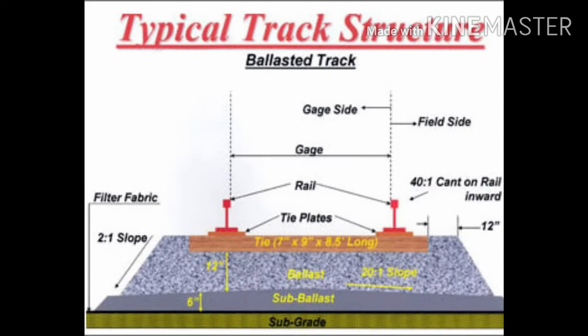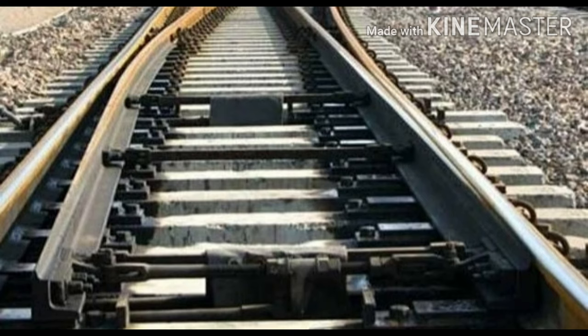Let us take our first component from the top, which is rails. As you can see in this figure of a typical track structure — rails are made of steel, they are rolled I-sections. They are fixed to the sleepers by various fastenings and rest on sleepers. In the figure you can see how rails are connected to sleepers and how tie plates are also used.